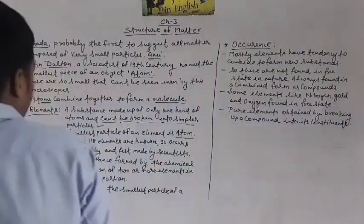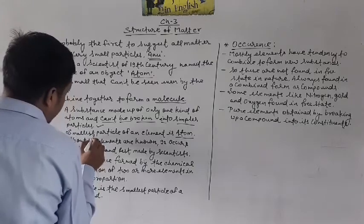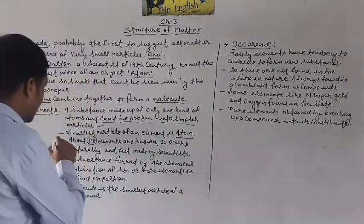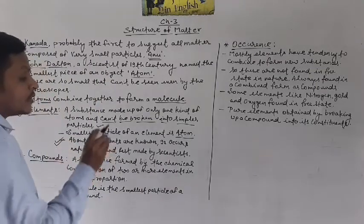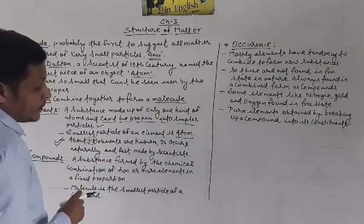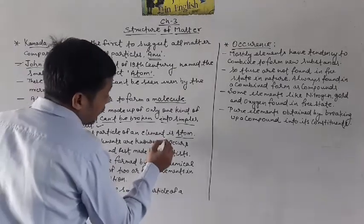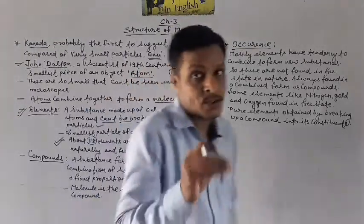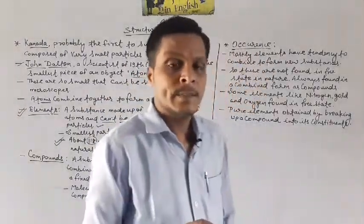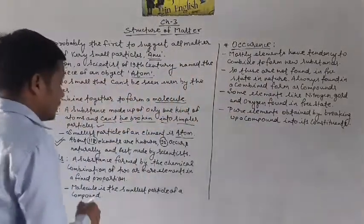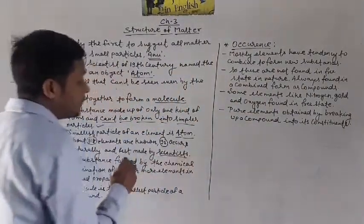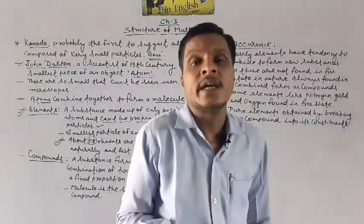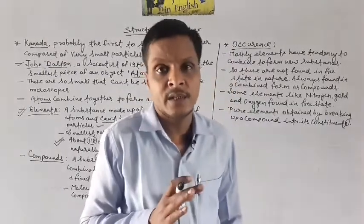As we know, about 118 elements are known to us. Yani 118 elements hain jinke baare mein hum log jaante hain. Out of that, only 92 occur naturally — sirf 92 jo hain, wo naturally occur karte hain, naturally hume mile. And the rest were made by scientists through experiments.